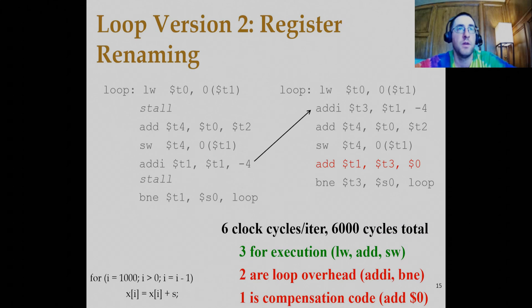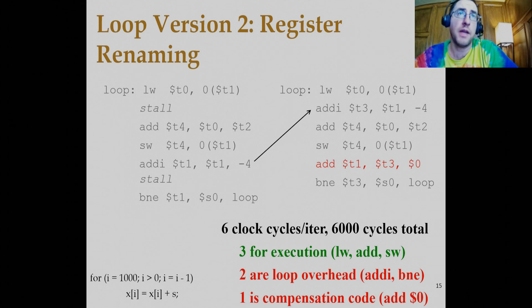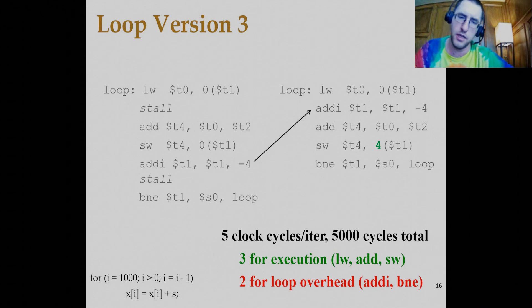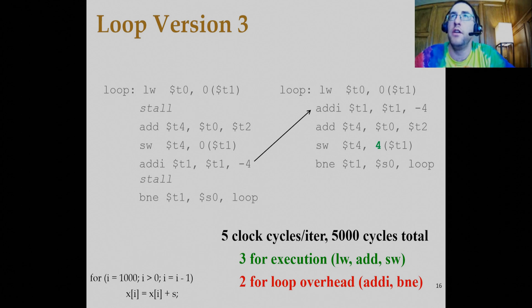We can rewrite this code to minimize stalls by exchanging the order of operations — decrementing the pointer by four after the load word. Everything shifts down, but we need one extra line of compensation code. This gives six instructions and approximately 6,000 cycles — an improvement of 1,000 cycles. We can do better by using an offset value on the store word instruction, eliminating the compensation code entirely by using an offset of four from T1 and subtracting by four earlier. This gets the loop down to five clock cycles per iteration, though two instructions — the pointer decrement and branch — remain loop overhead.